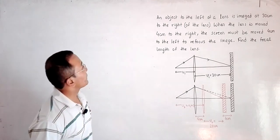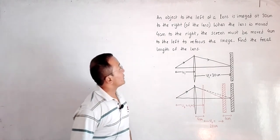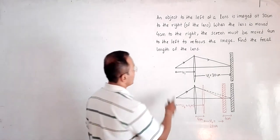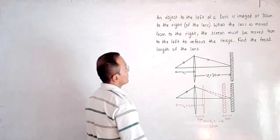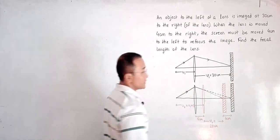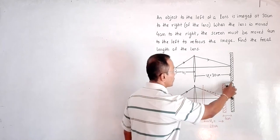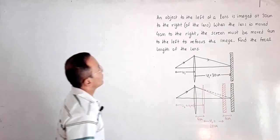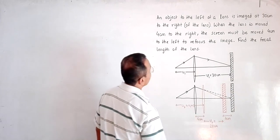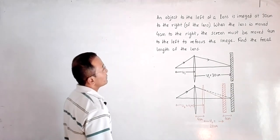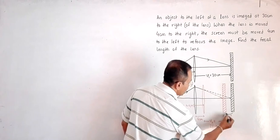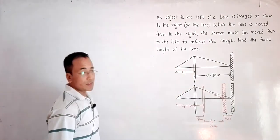The question for today is: an object to the left of a lens is imaged at 30 centimeters to the right. We have an object, a lens, and it produces an image at a distance of 30 centimeters from the lens — this is the screen. When the lens is moved 4 centimeters to the right, the screen must be moved 4 centimeters to the left so that the image is formed once again.